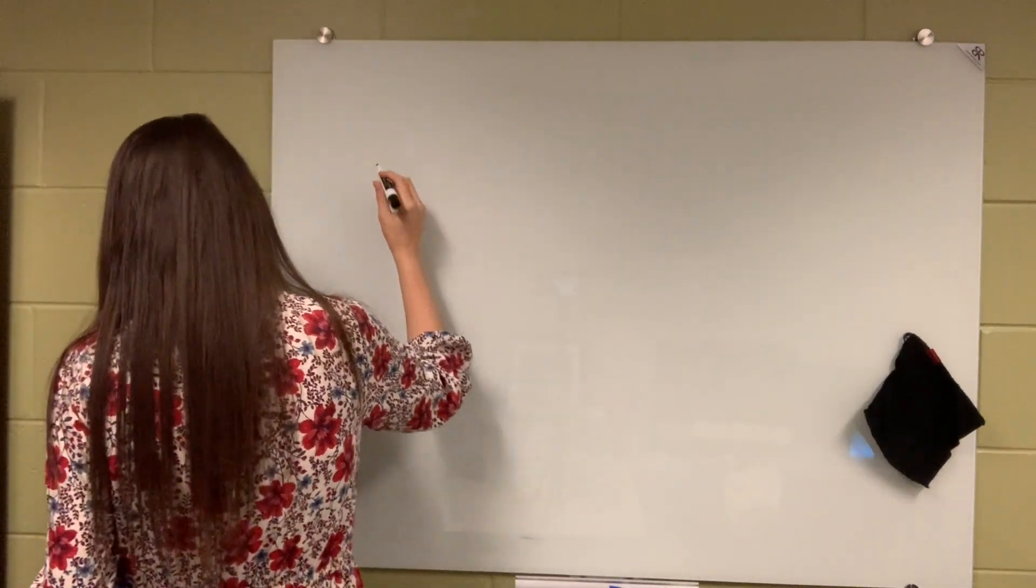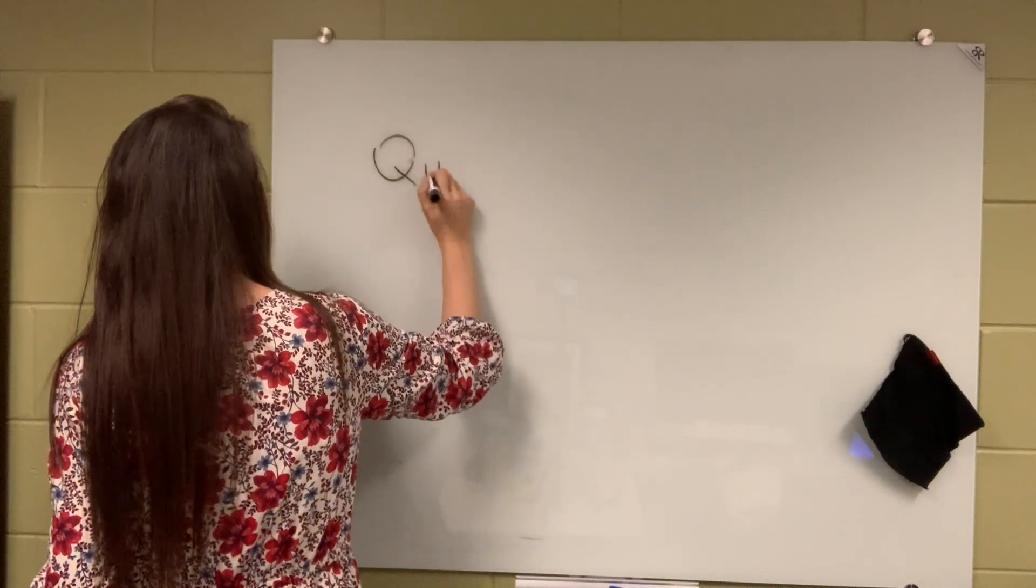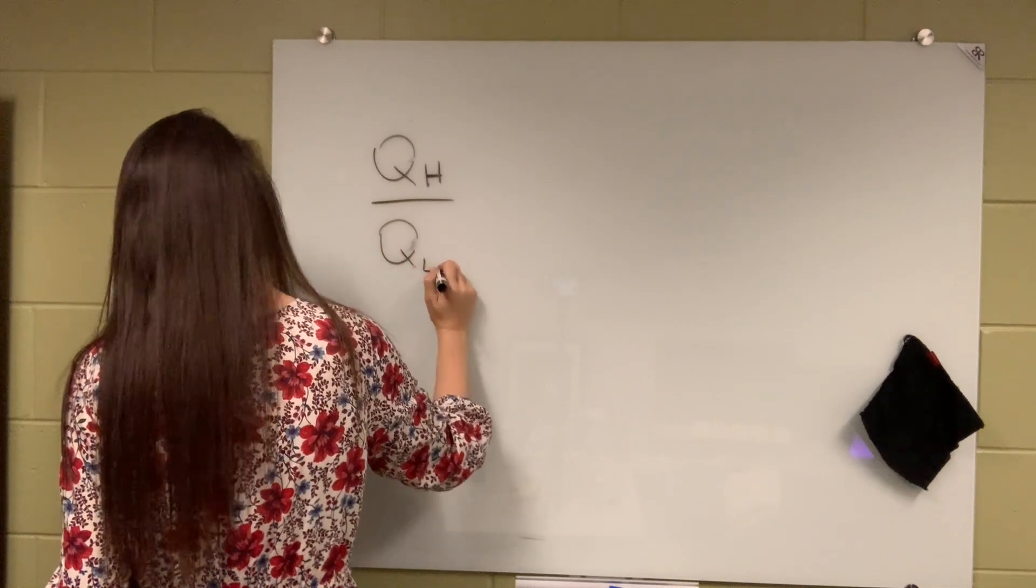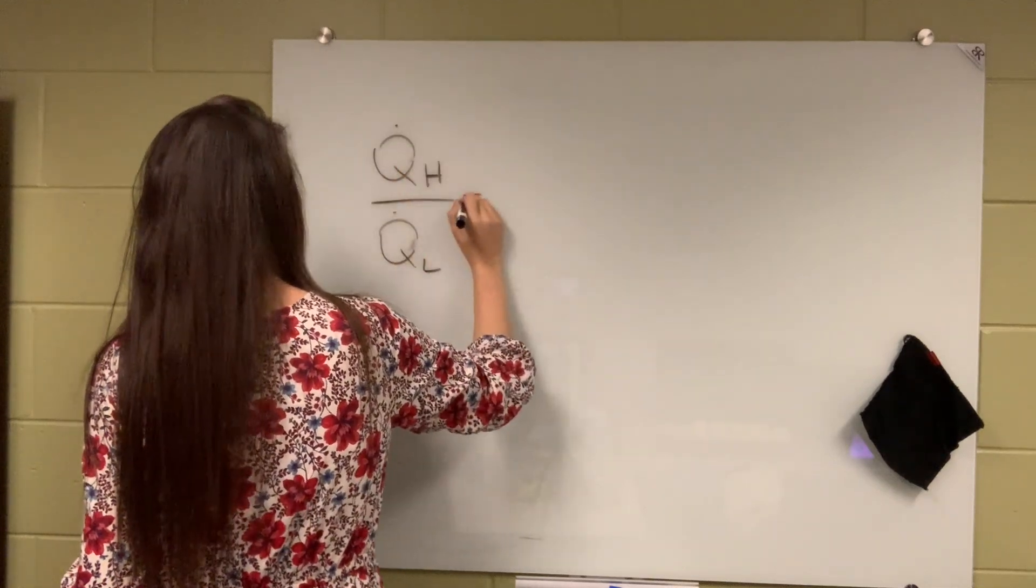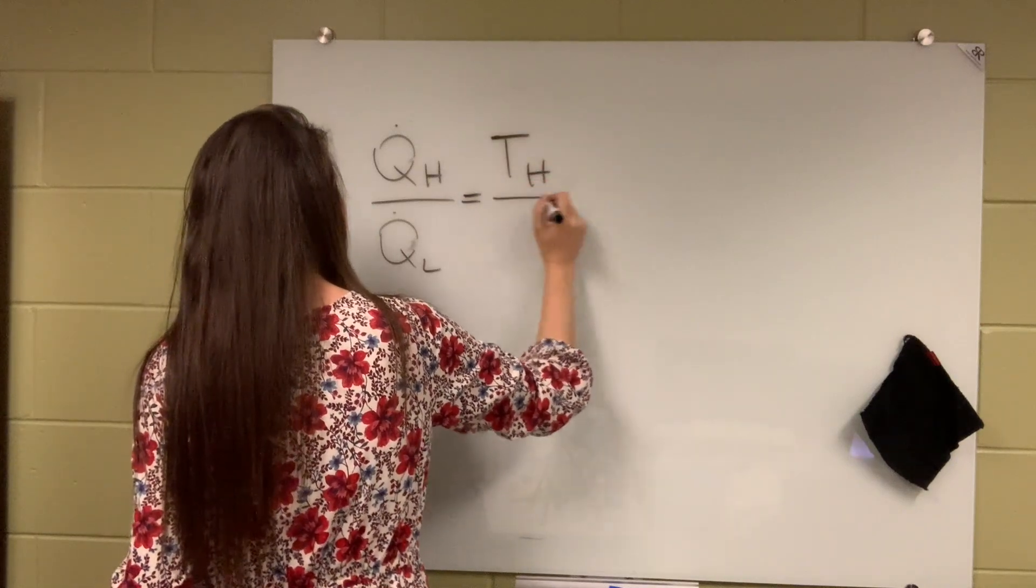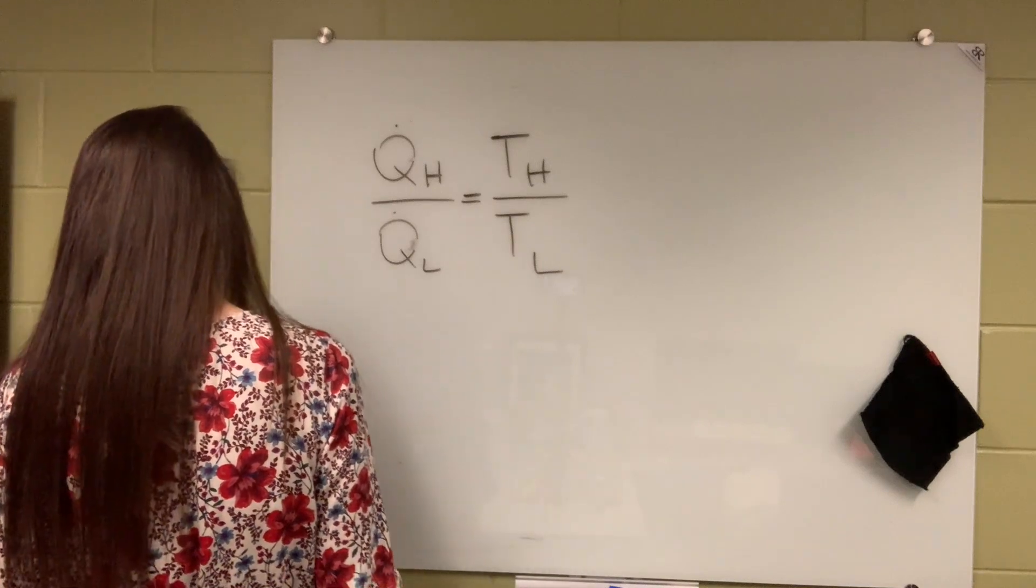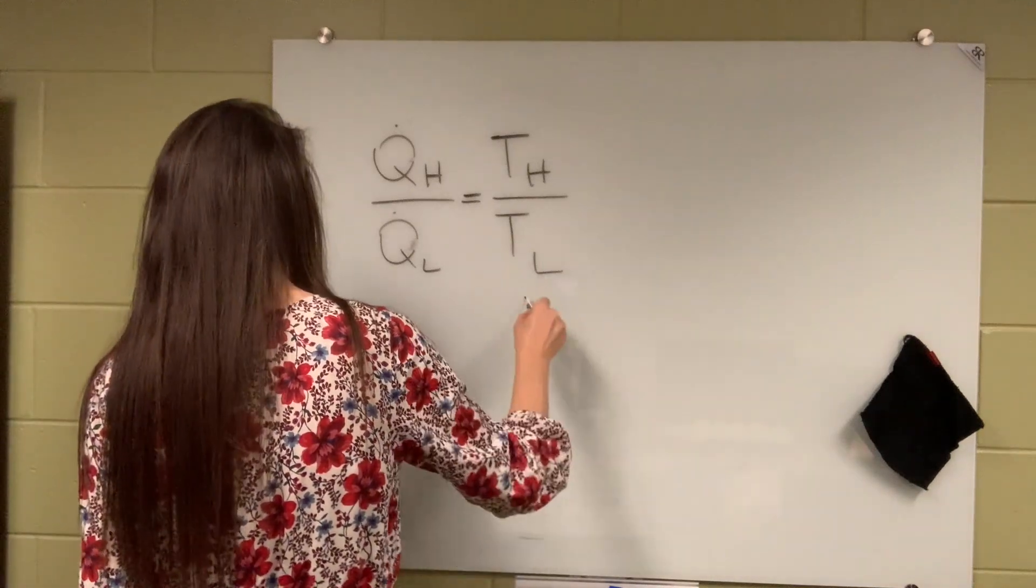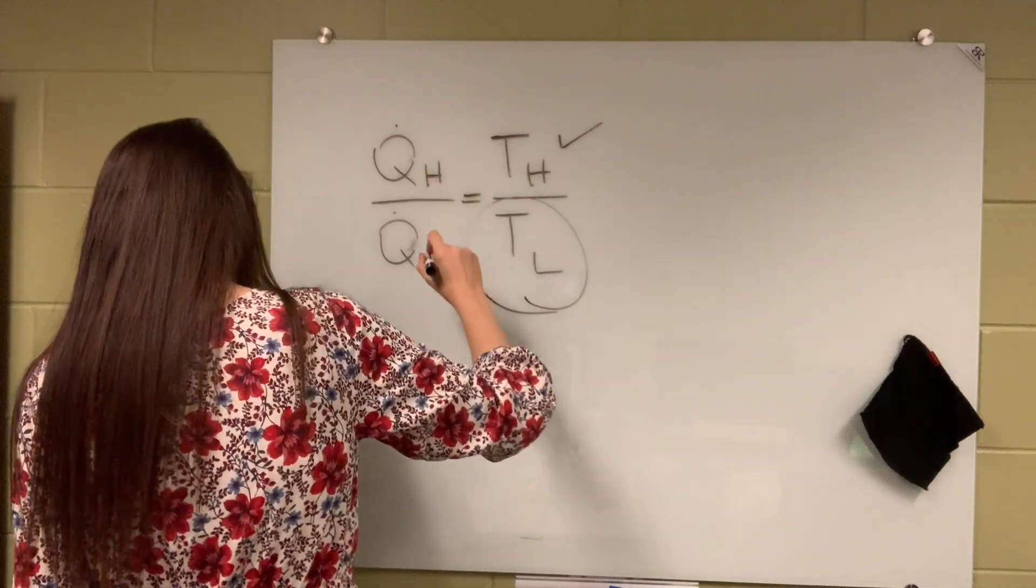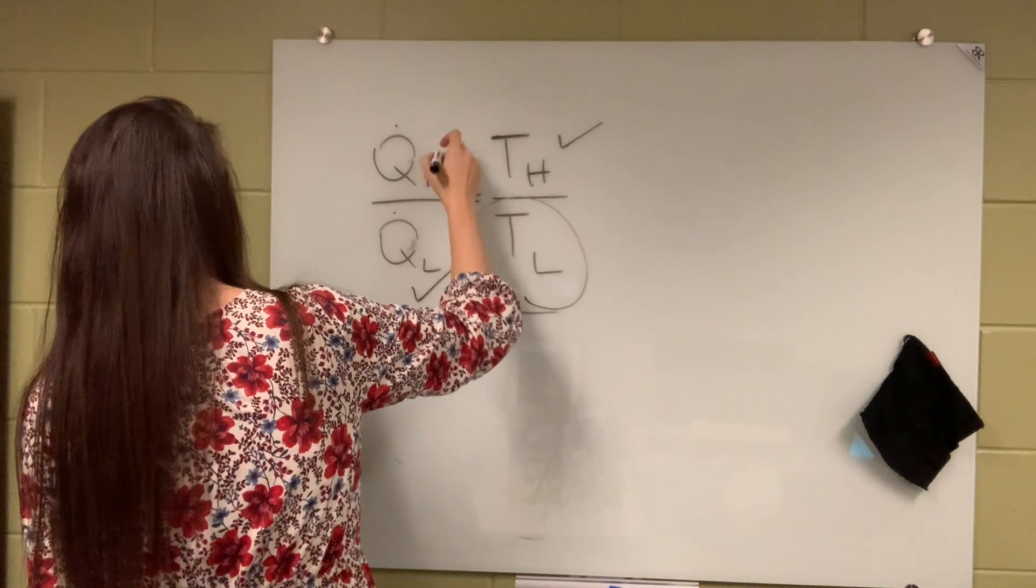Okay, so I know for Carnot devices, QH over QL is related to the ratio of the temperatures of the high temperature reservoir over the low temperature reservoir. So this one I'm trying to figure out. This one I know. This one I just calculated and I can also calculate this one.